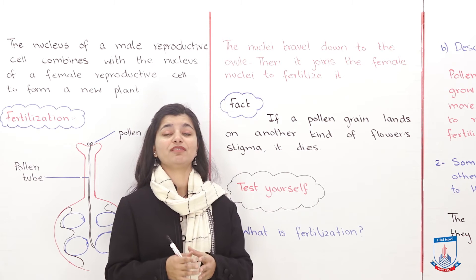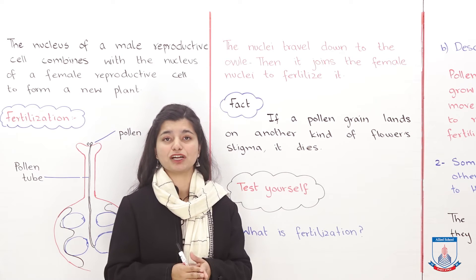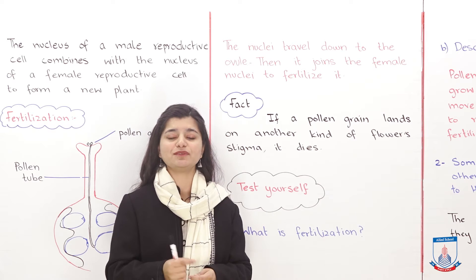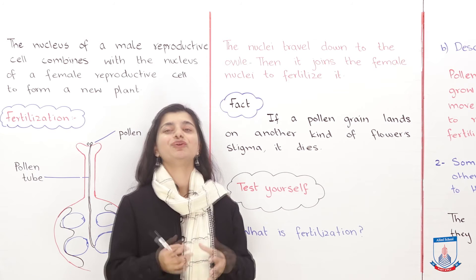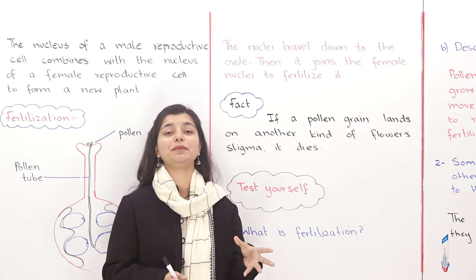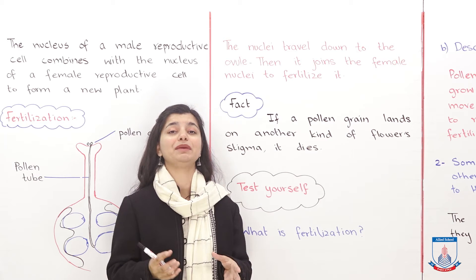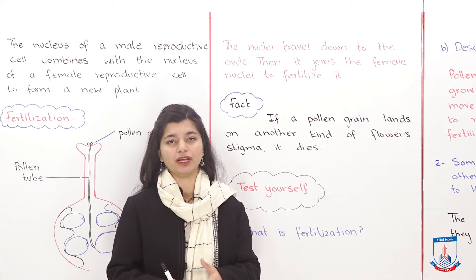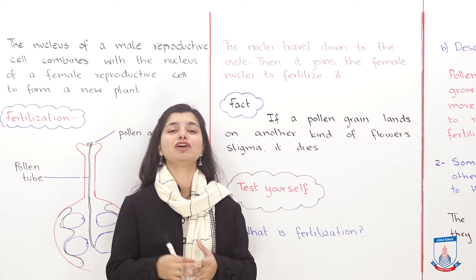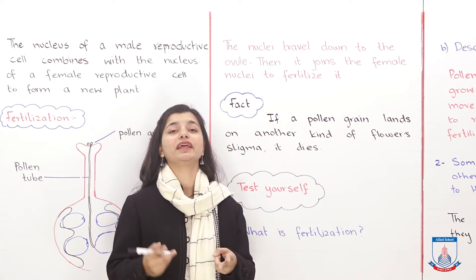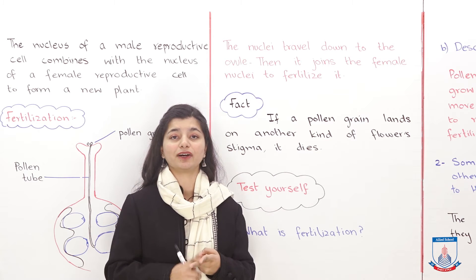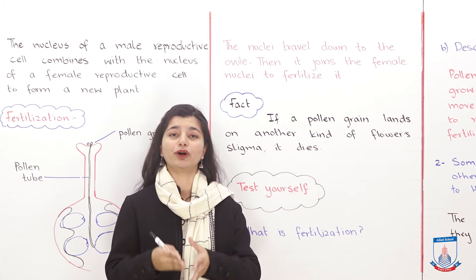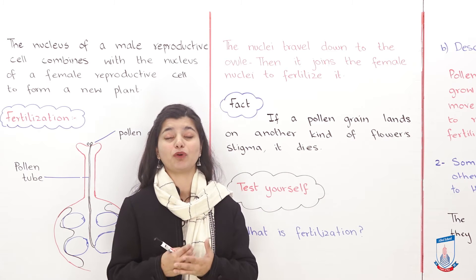So this is an interesting fact. We have now covered the topic of fertilization — it was very simple, because essentially the male gamete fuses with the female gamete, and that process is called fertilization. We understood that it occurs, and that the pollen grain grows a pollen tube through which fertilization is possible.